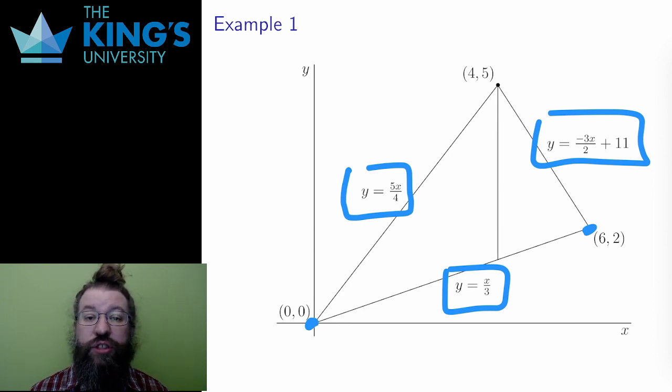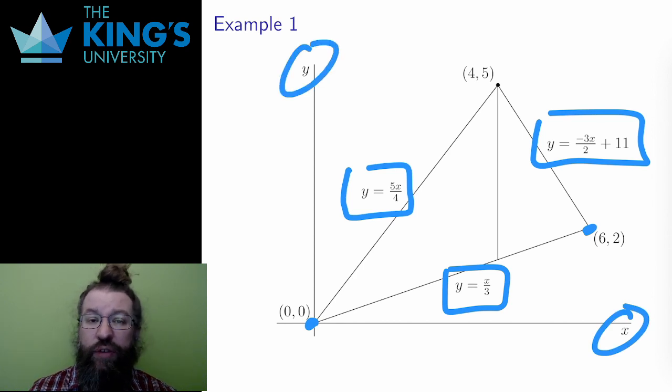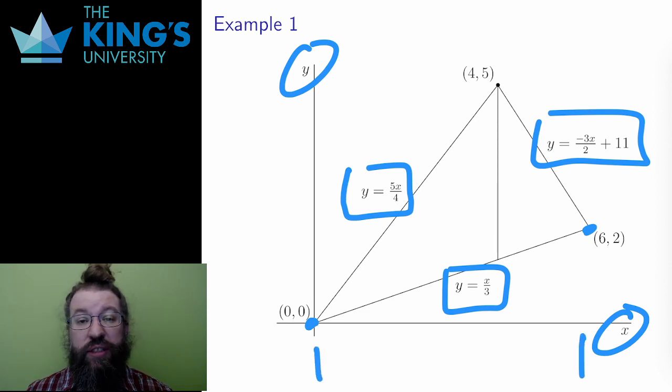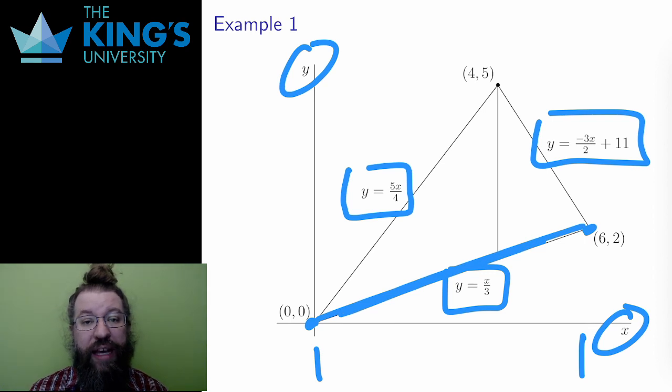I want to choose the order of integration and then figure out the bounds for the inner variable. I'm going to try to set it up with x as the outside variable and y as the inside. However, I immediately notice a problem. I can let x go from 0 to 6, and the lower bound for y will be x/3, but the upper bound is different for different parts of the triangle.